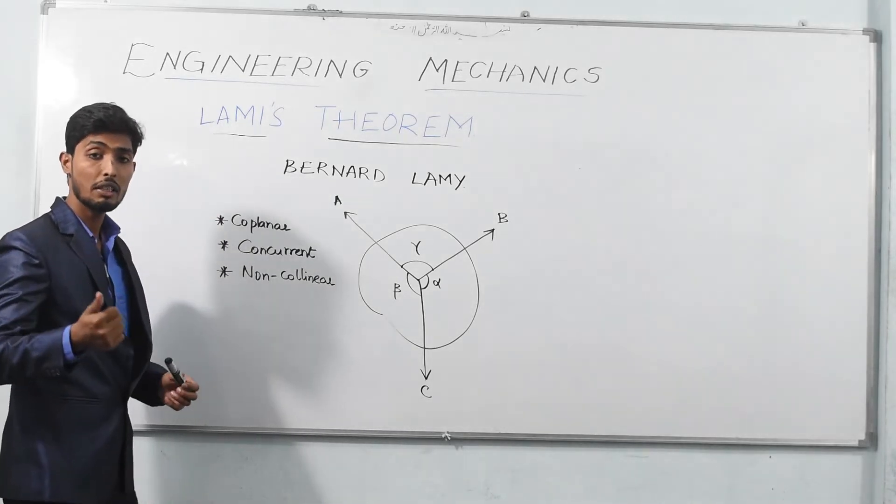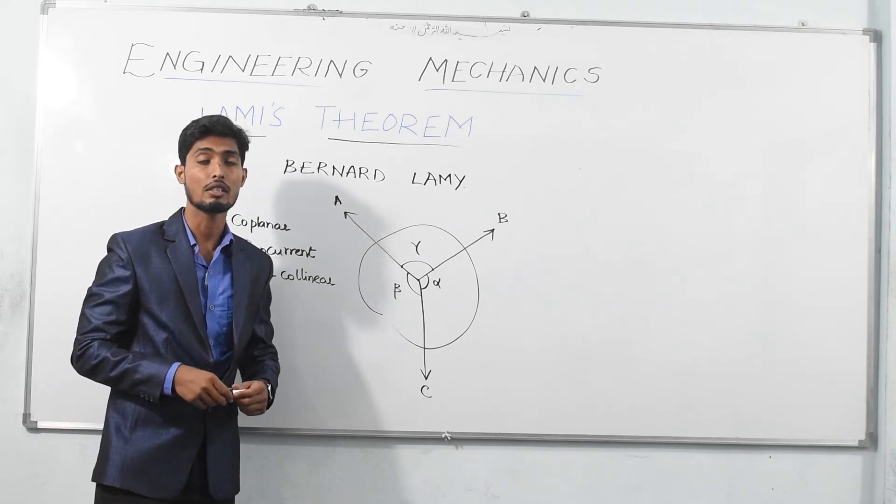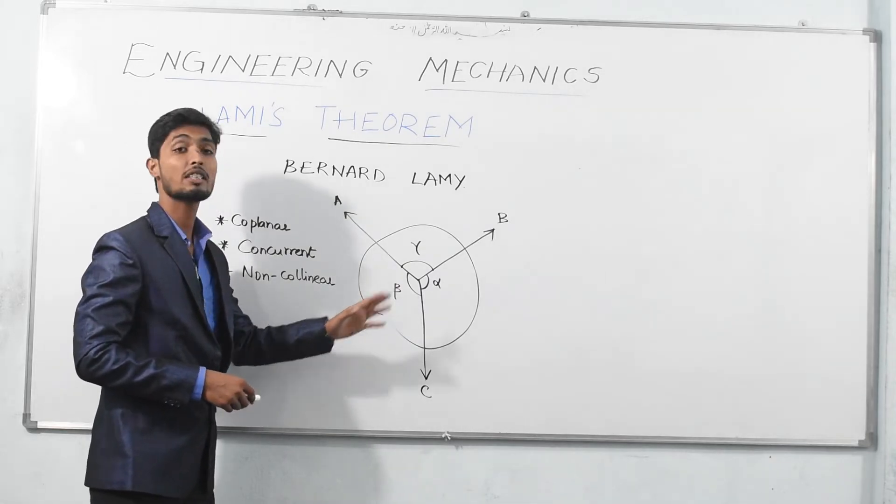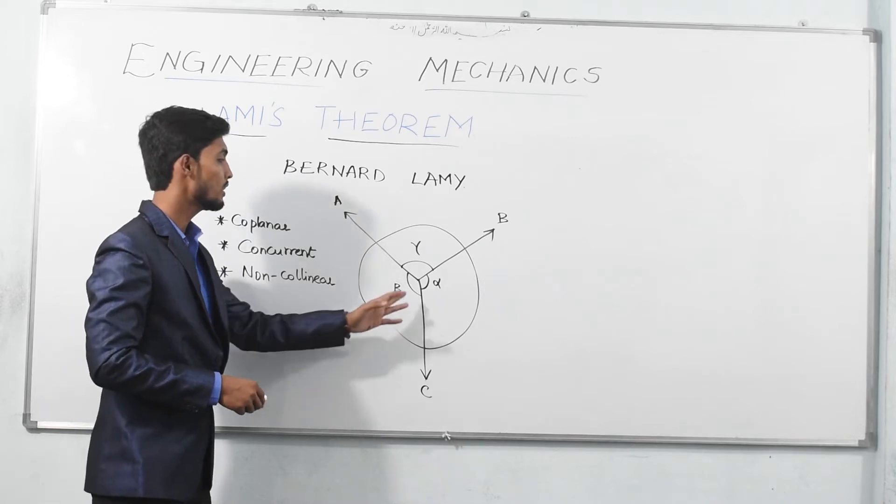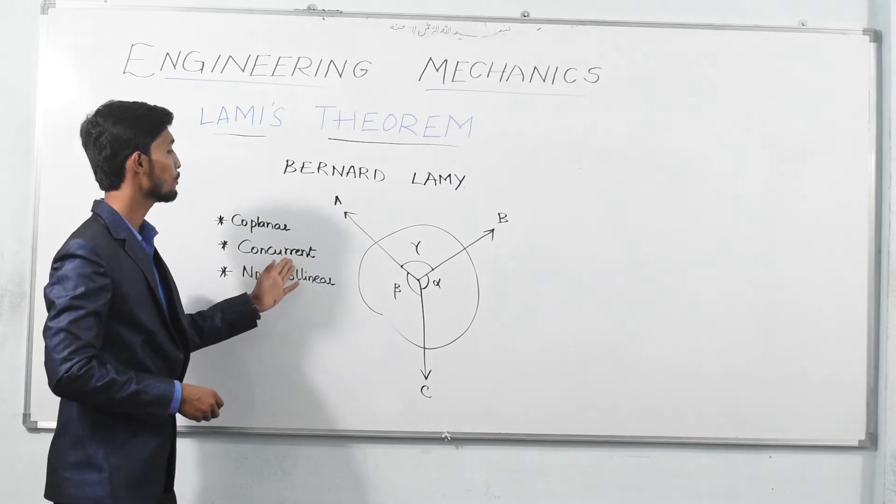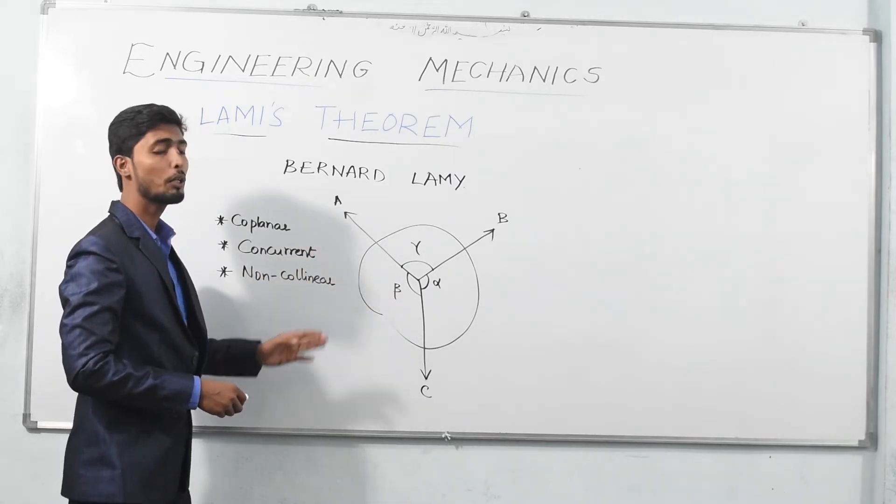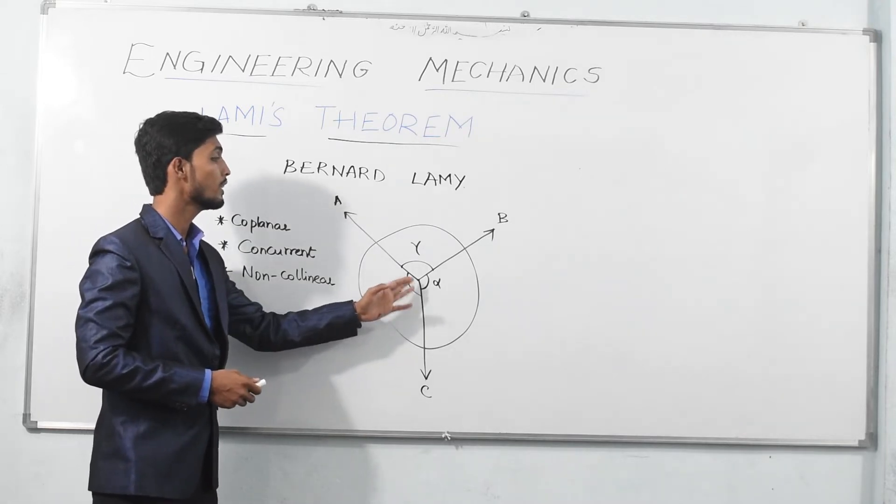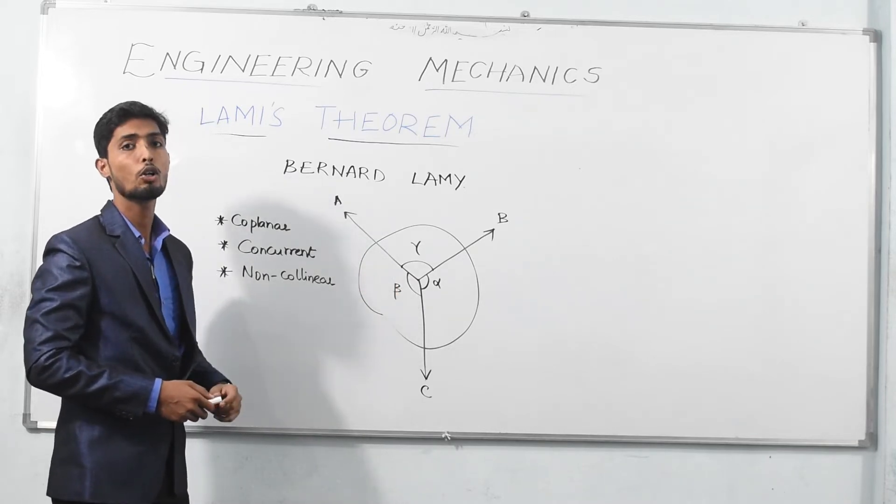Alright, so the term coplanar means the forces which lie on same plane are called coplanar forces. Coming to concurrent, concurrent force means the force system which has a common point, as we have used three forces over here. So these three forces have a single common point or contact point. Coming to non-collinear, the forces should not be on a same line. As you can see, these are on the common point but not on the same line.